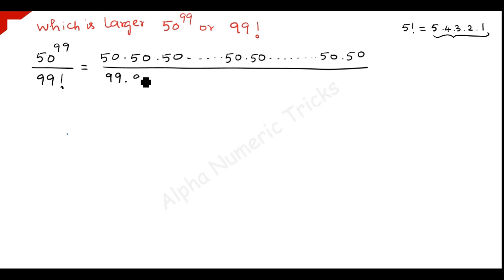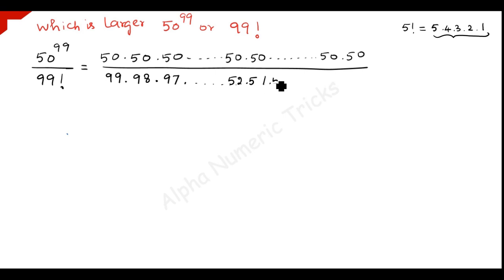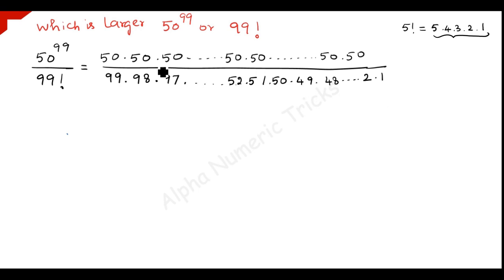Start with 99, reduce by 1 each time: 99 times 98 times 97 ... 52 times 51 times 50 times 49 times 48, and so on, down to 2 times 1. Totally we have 99 terms in the denominator, and the numerator also has 99 terms.